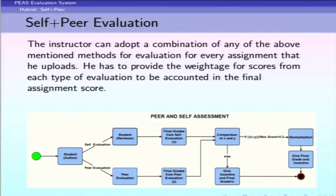This produces two sets of scores — one from the student's self-assessment and one from the peer grading module. These scores are compared, and if the difference lies beyond a certain range, they are normalized and the final scores calculated. If the difference is within a particular range, the student's own self-assigned score is used as the final grade.